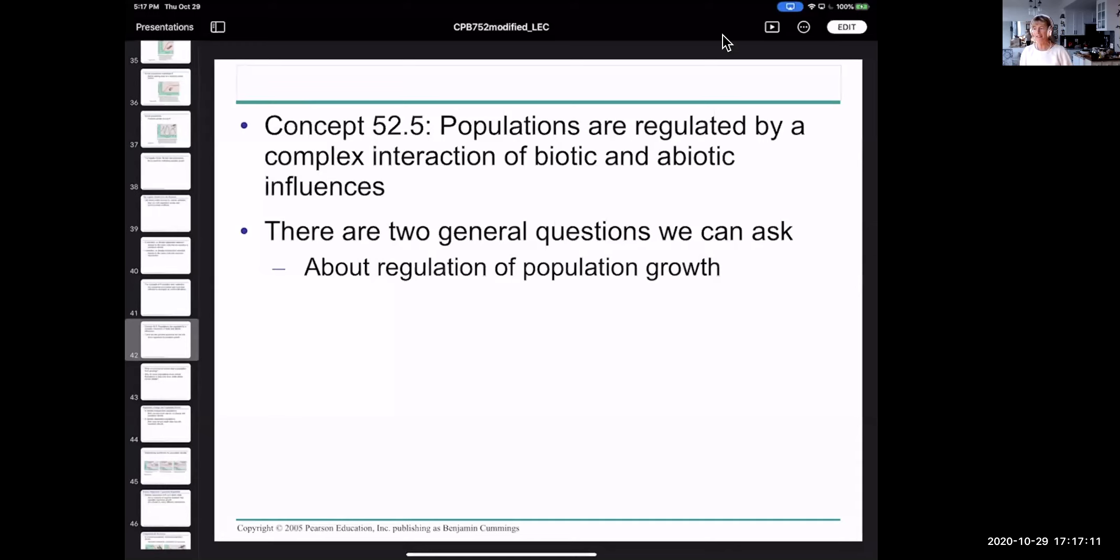So I'd like to talk a bit more today about populations and population cycles and what limits population sizes. Last time we looked at the K selected species and R selected species. A K selected species is one that lives for a long time and has a few offspring, and R selected species tend to be those that are short-lived and have a lot of offspring all at once. The R selected species probably have more of an unstable environment so their populations grow very quickly.